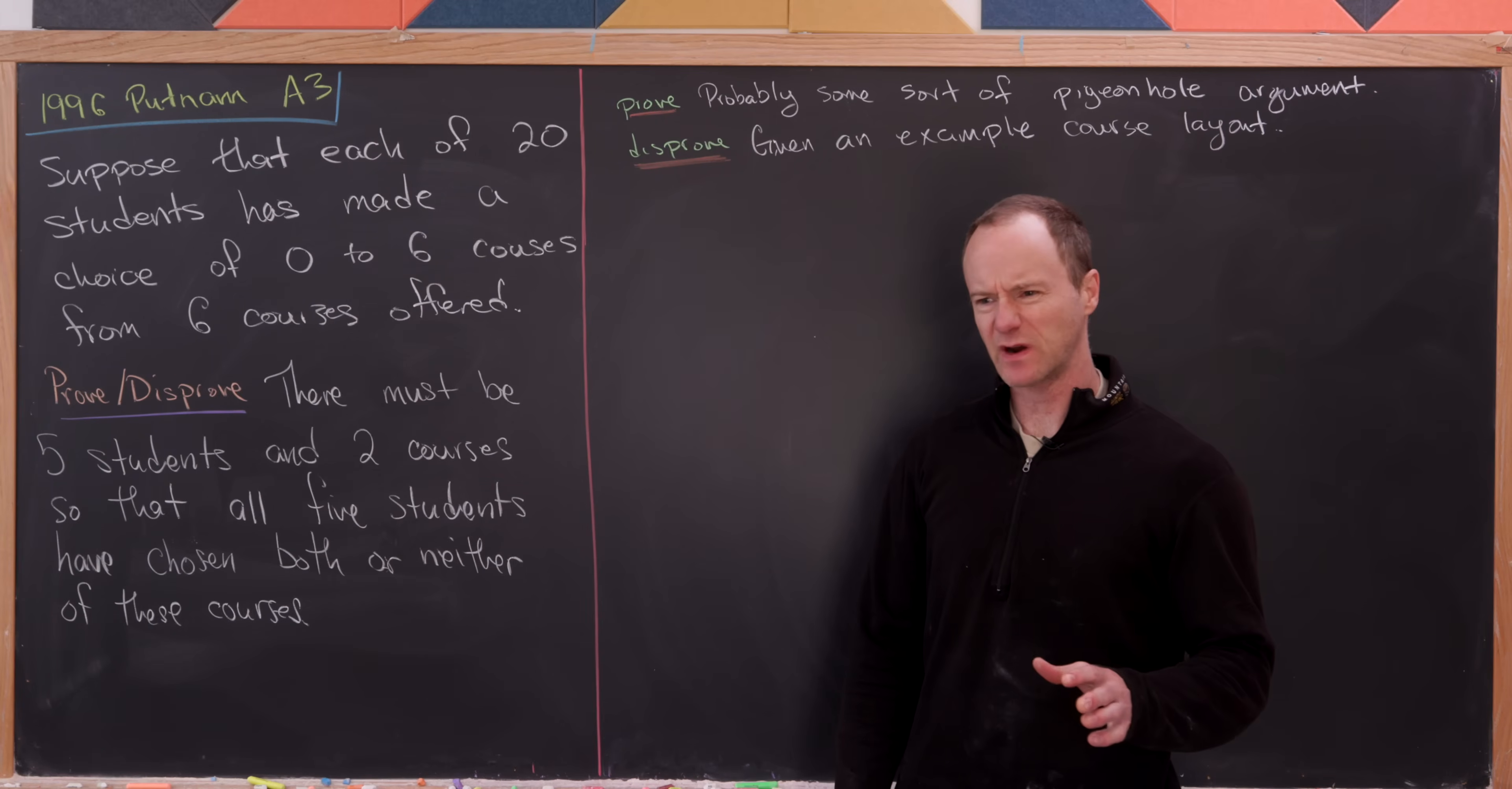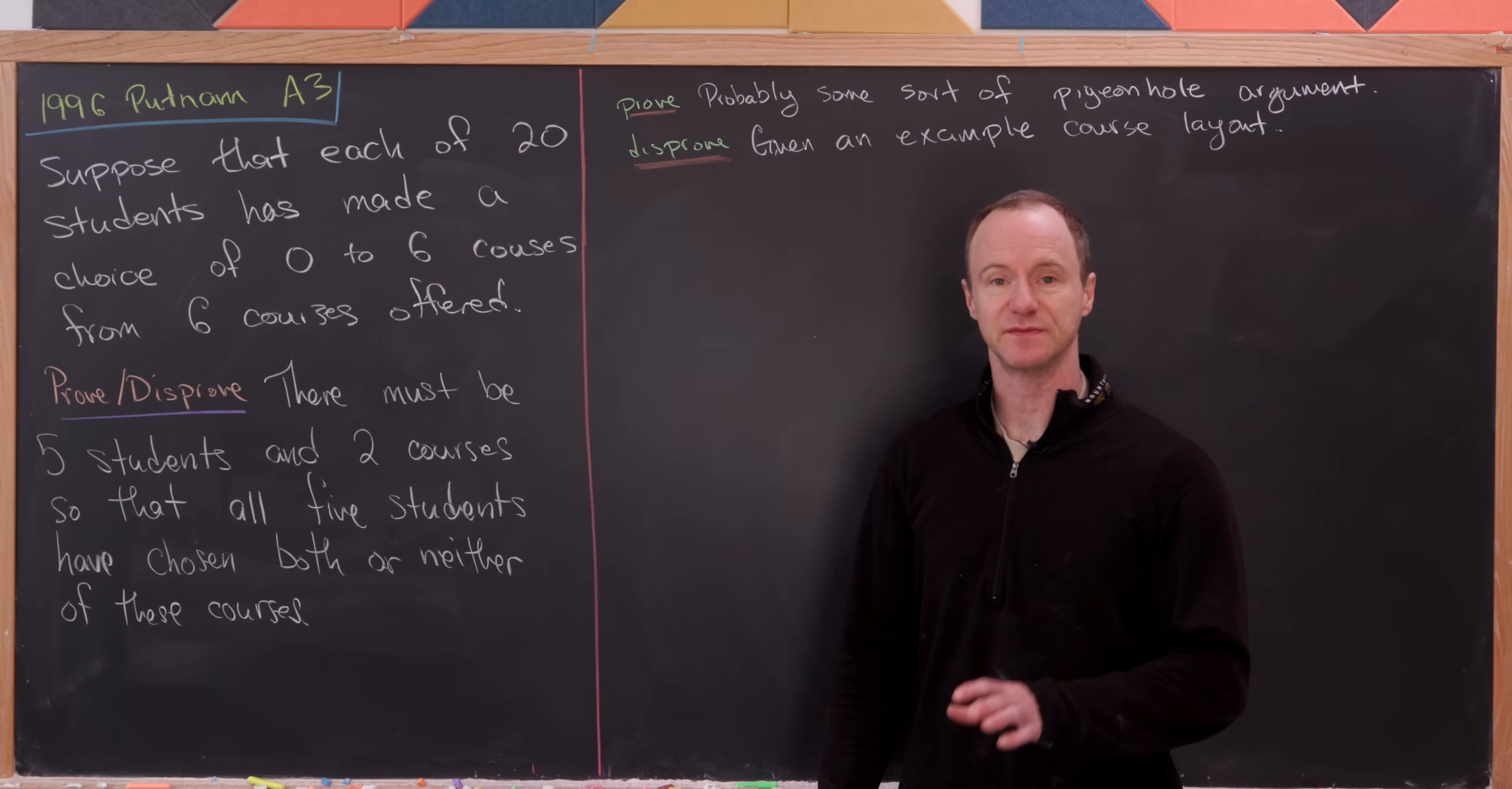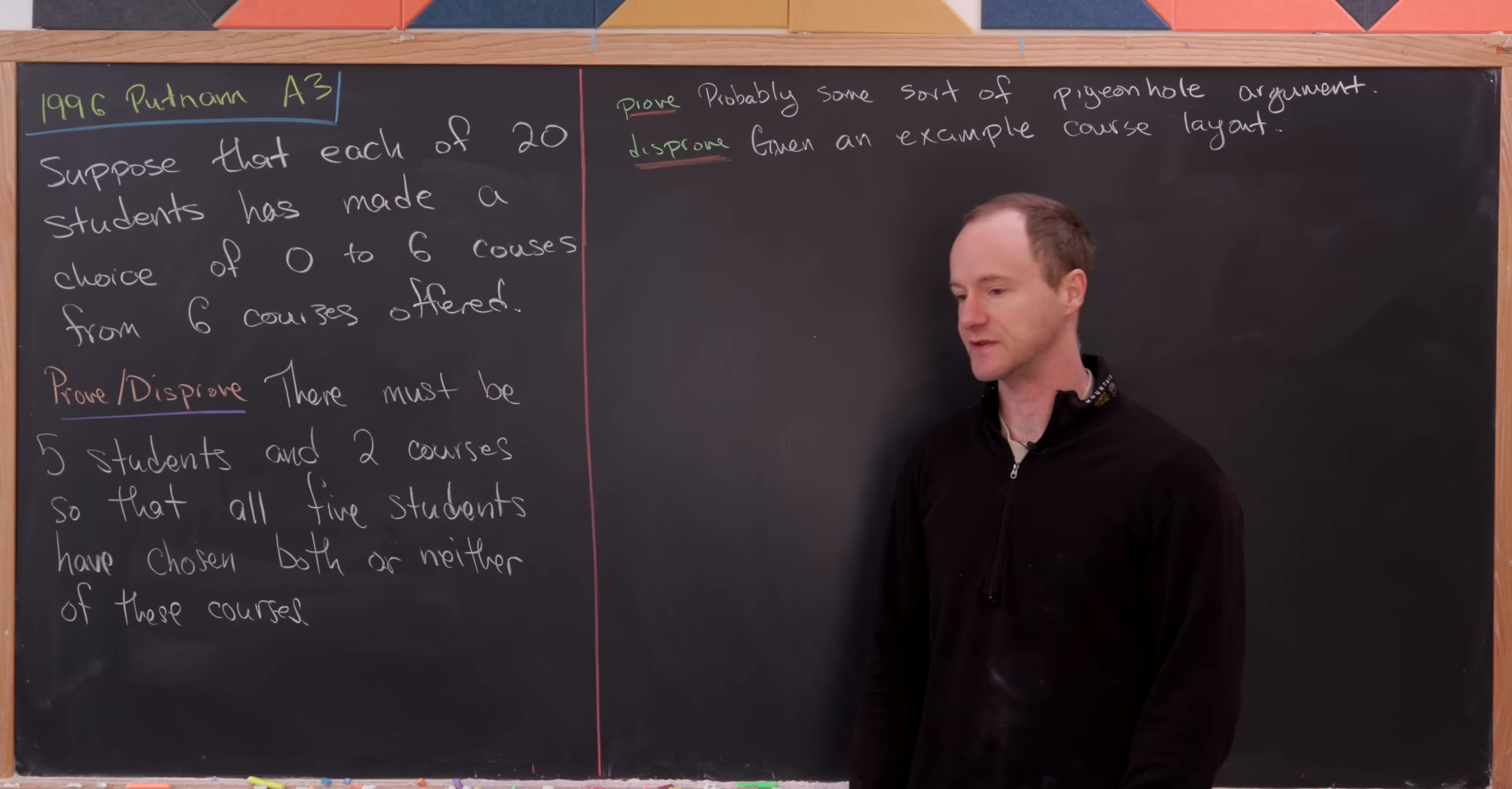So if you want to think about this as like there are 20 math majors at a college perhaps, and there are six upper division math classes being offered, and the math majors all decide to take between zero or six of these courses.